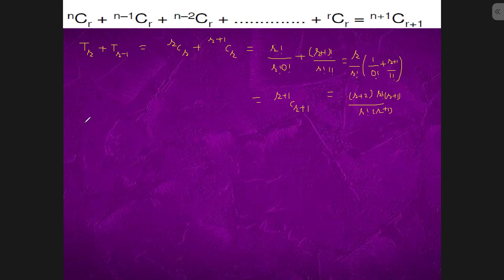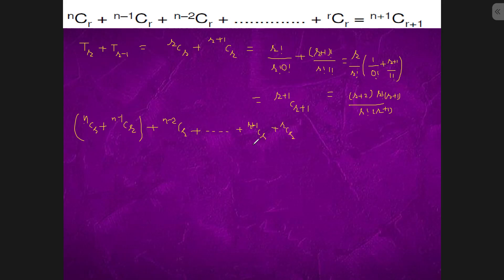So this is coming out to be nCr plus (n-1)Cr. We keep on doing: n minus two Cr plus dot dot dot plus r minus one Cr plus rCr. This two will come out to be r plus two C r plus one.